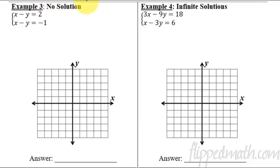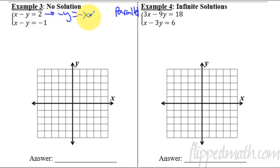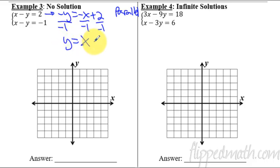Example three — we're talking about no solution. Now what does it mean if there's no solution? It means there's no point of intersection. So the idea here is I should be working with parallel lines. So let's just double check this. I'm going to rewrite this one. If I subtract an x, I'll get negative y equals negative x plus two. Don't forget that the negative is attached to the y — very common mistake. So we'll divide by negative one, and y equals x minus two. Let's graph that real quick. A slope of one.